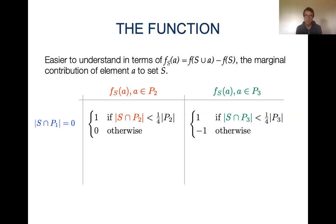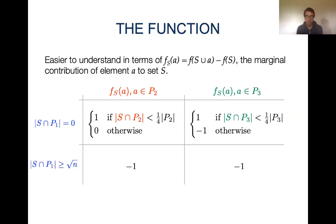We can see that the optimal solution is the set P3, and that we do not want to add elements from P2 to the optimal solution. Now, to make elements from P2 and P3 indistinguishable, we will use elements in P1 to mask the differences between elements in P2 and P3. If we have a large number of elements from P1 in our set S, then elements in P2 and P3 will have the same marginal contribution — negative 1 in both cases.